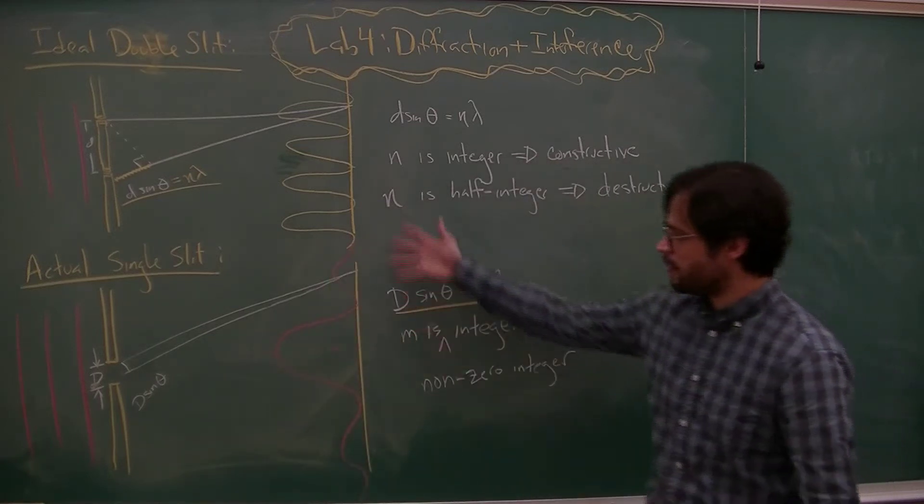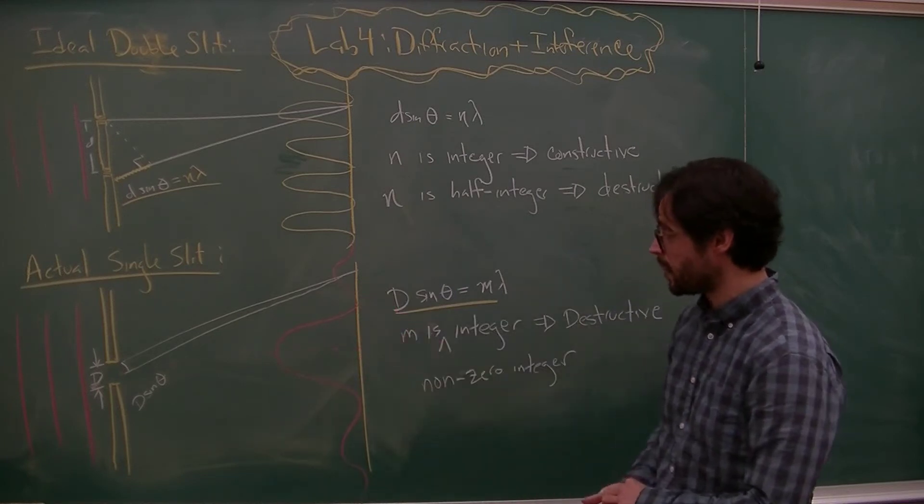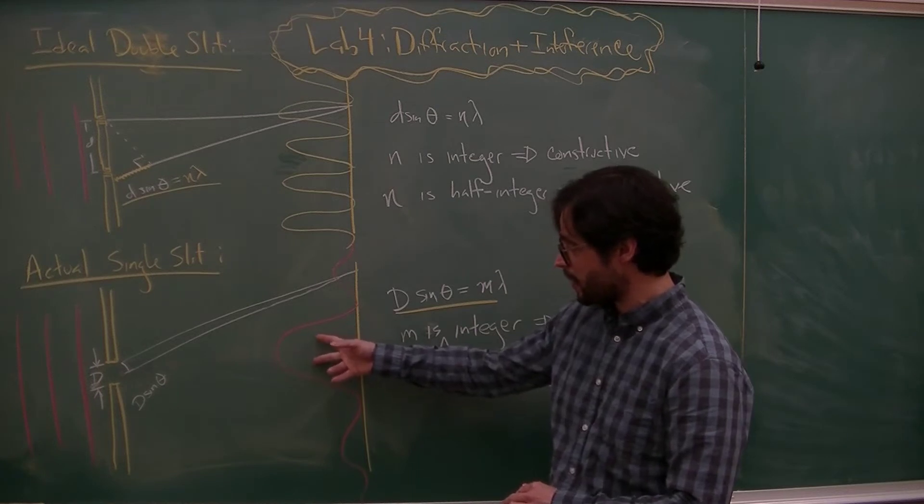And then this condition d sin theta equals m lambda will tell you where these first and second order minima are. So for a single slit you actually get a pattern that looks like this, alternating bright and dark fringes with a big bright central fringe that's twice as wide as these.